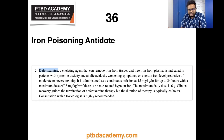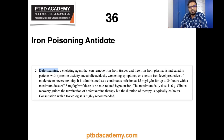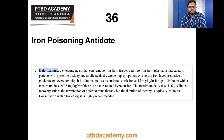The next topic is iron poisoning and its antidote. Deferoxamine is a chelating agent that can remove iron from tissues and free iron from plasma. It is indicated in patients with systemic toxicity, metabolic acidosis, worsening symptoms, or a serum iron level predictive of moderate or severe toxicity. It is given IV with a maximum dose of six grams per day — consider this very important. Also, note BAL (British Anti-Lewisite) and what it is used for.